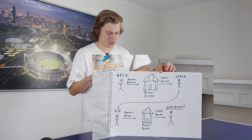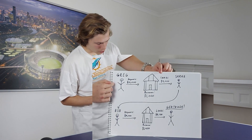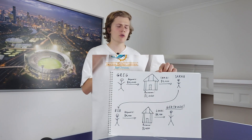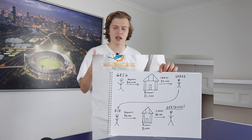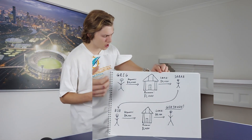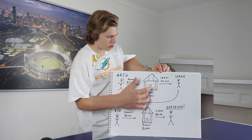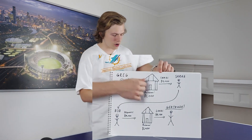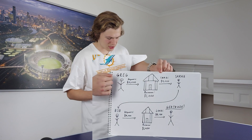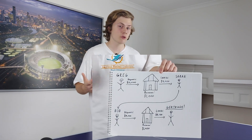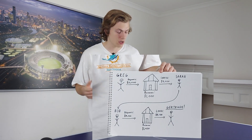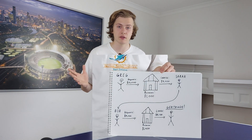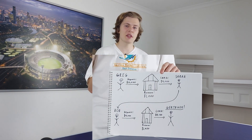Now, Greg has deposited $10,000, so according to his bank statement he has $10,000 in his account. The bank keeps $1,000 and loans another $9,000 — but that $9,000 isn't deducted from Greg's $10,000. So they've essentially created $9,000 lent to Sarah out of thin air.